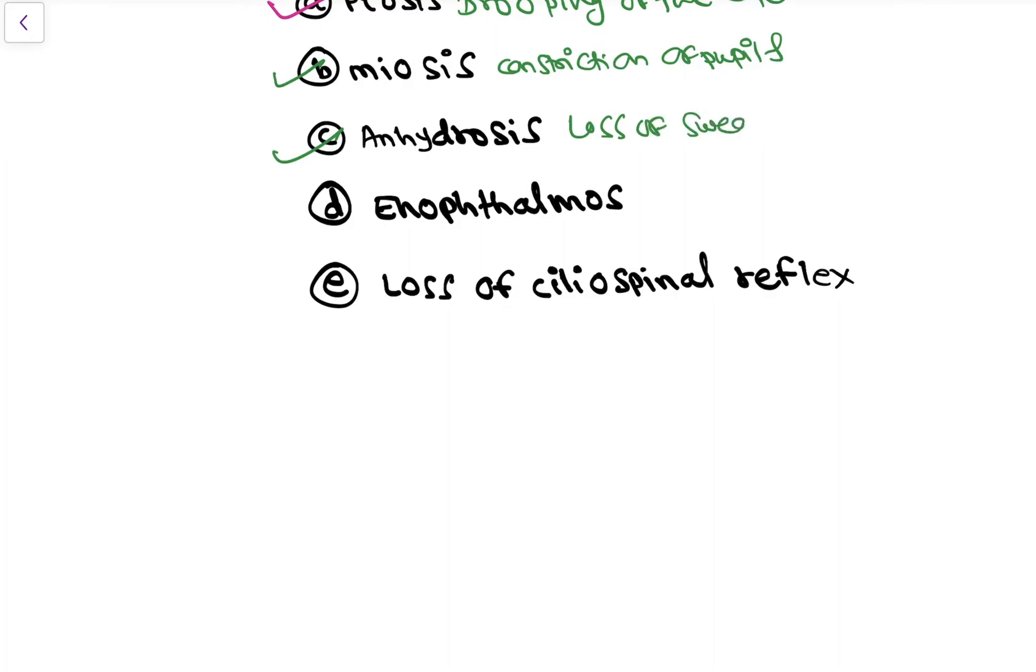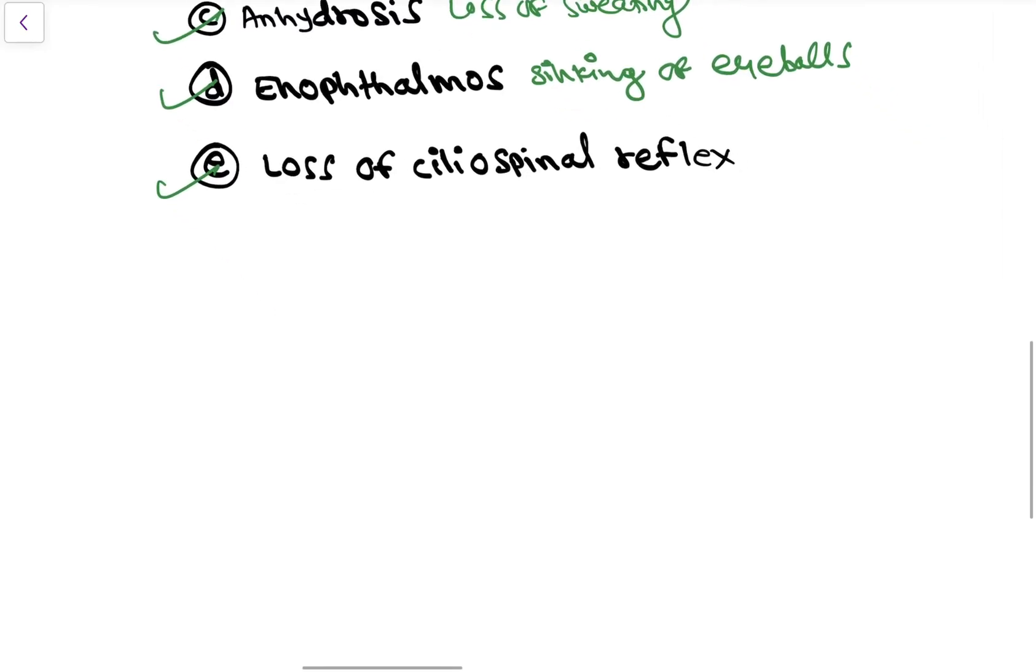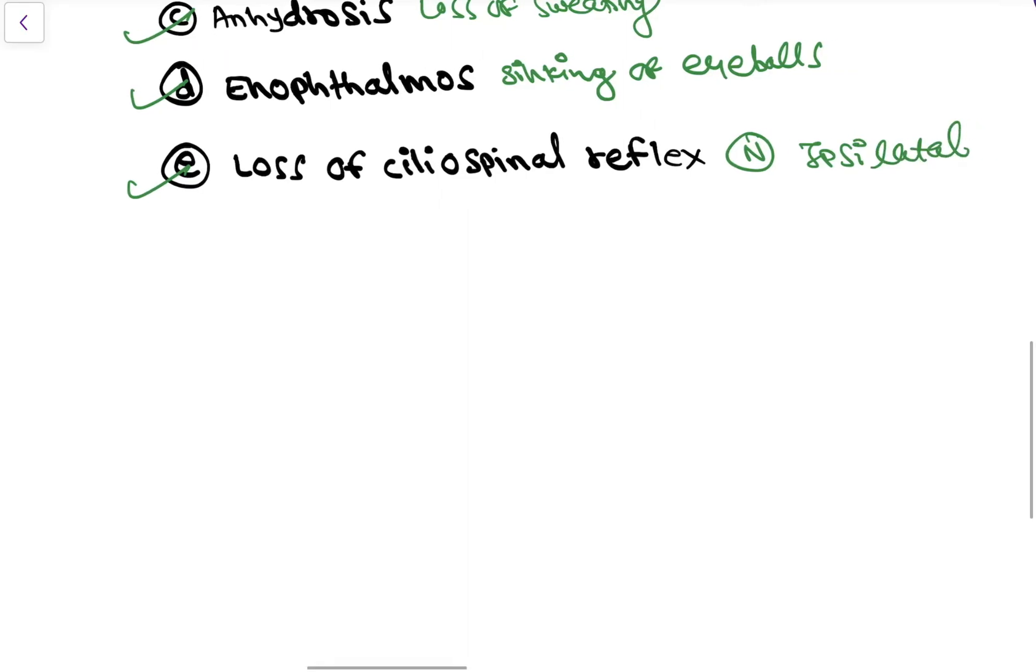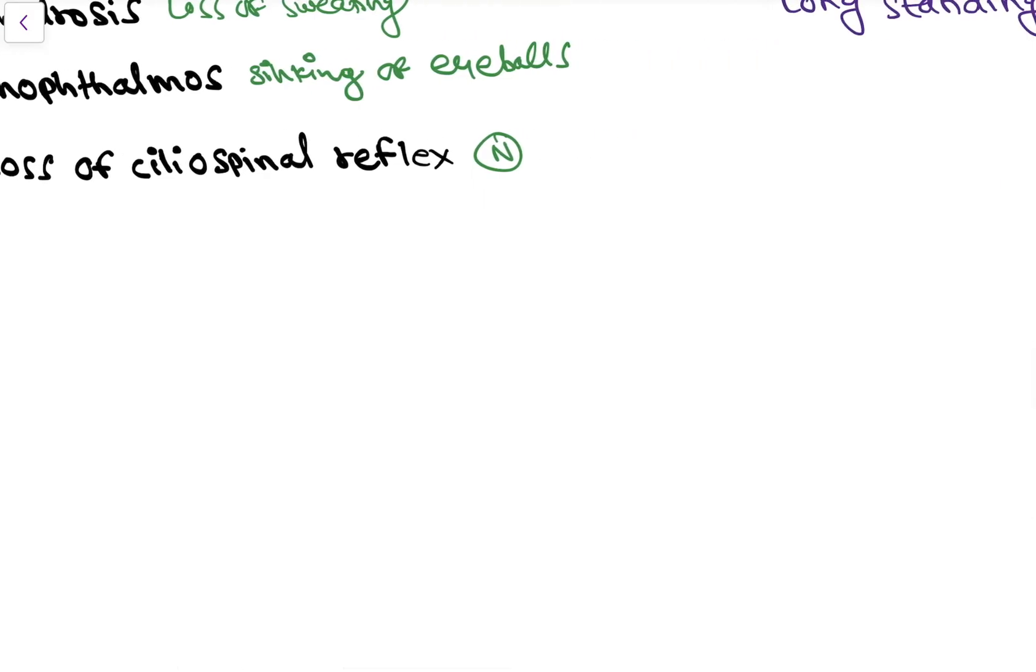So normal ciliospinal reflex is when there is painful stimulus to the nape of neck then there is dilatation on the ipsilateral side. So when the right side of the neck is pinched then there is dilatation of right side of pupil.